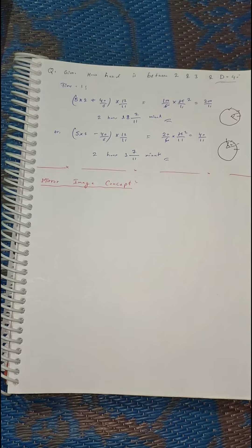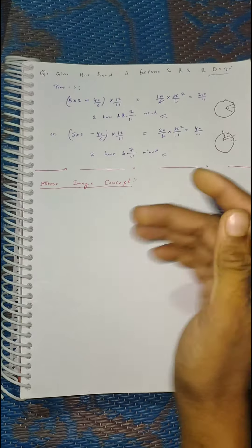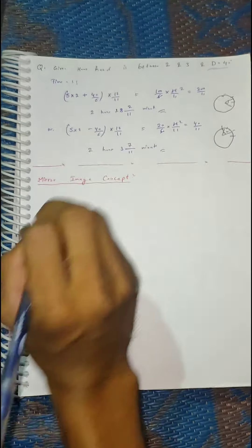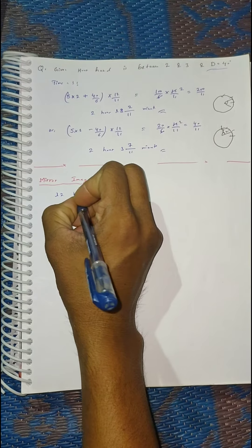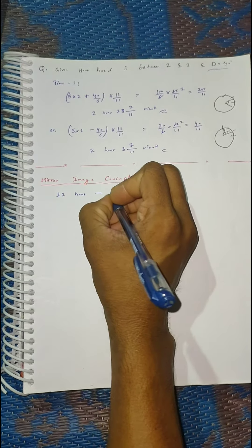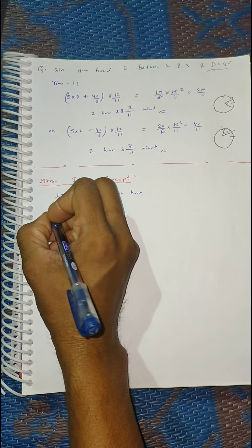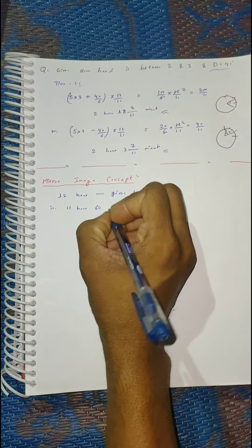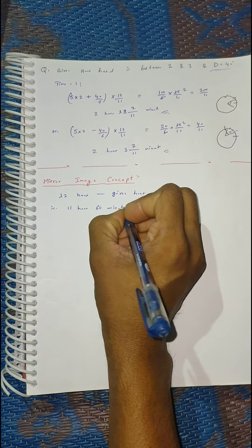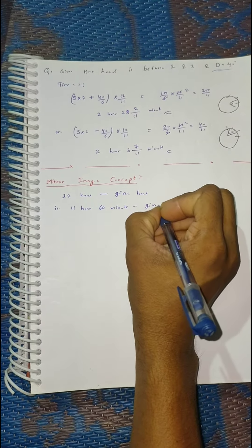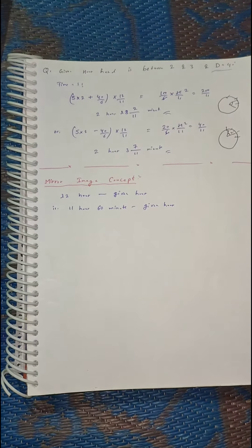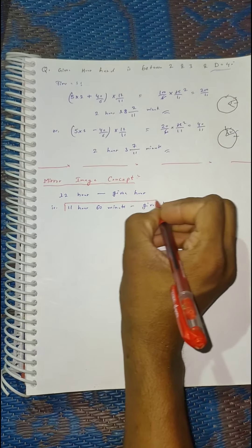For example, if a time like 3:40 happens on a clock, then what is the mirror image we see in the clock? This concept is calculated by the formula: mirror image equals 11 hours 60 minutes minus the given hour and given minutes.